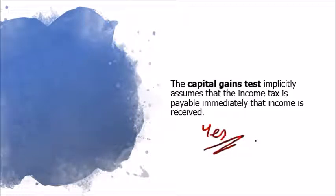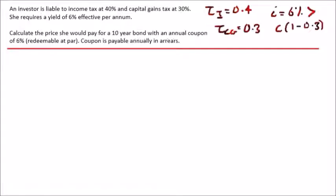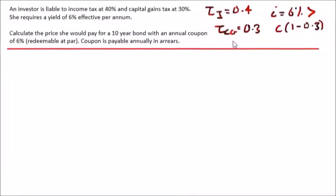Let's apply the full formula. The coupon is payable annually in arrears, which means it's payable at the end of the period. Redeemable at par means we assume a bond rate of 100. Let's work out the price. The price of the bond is going to be equal to, first things first, a par of 100 discounted to 10 years.